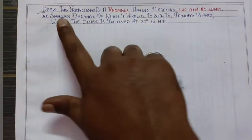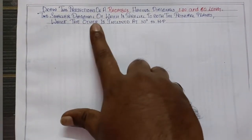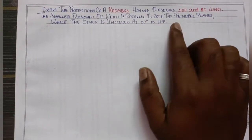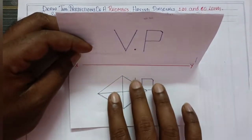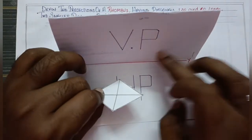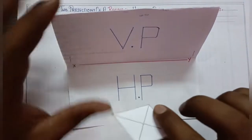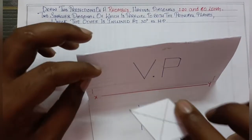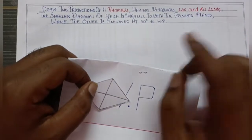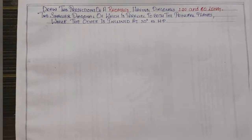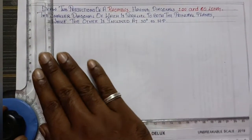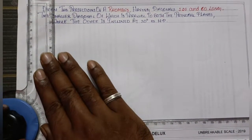We will see the small diagonal of the rhombus parallel to both the principal planes. First, we will draw a line from the right angle, draw the smaller rhombus, and draw the rhombus shape. Then we will draw a line from the left angle as well.